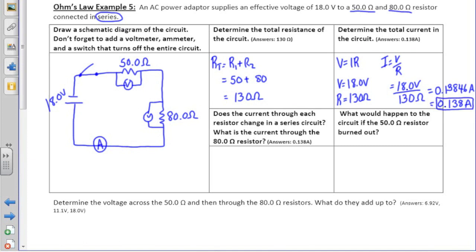The fourth part of this question asks, does the current through each resistor change in a series circuit, and what is the current running through the 80 ohm resistor? Because in a series circuit, the currents only have one pathway to flow, if there's 10 electrons, there's always 10 electrons running through each resistor. In this case, the total current in the circuit is 0.138 amps. So that is how many electrons are running per second through the 80 ohm resistor.